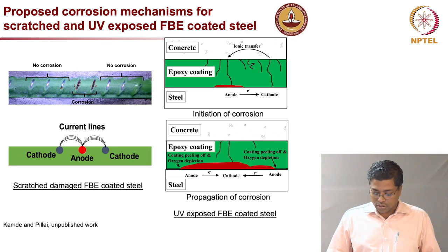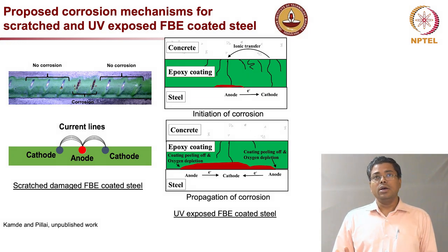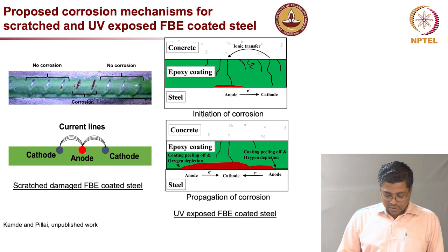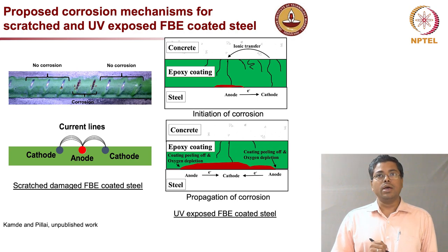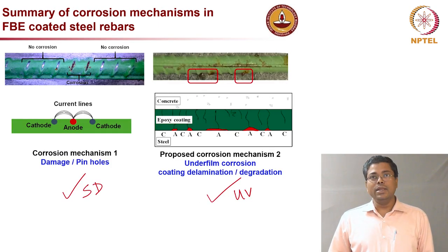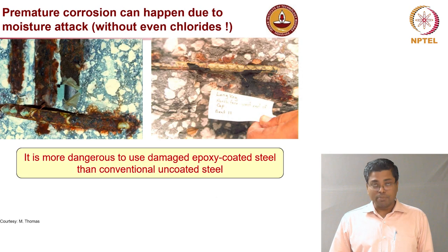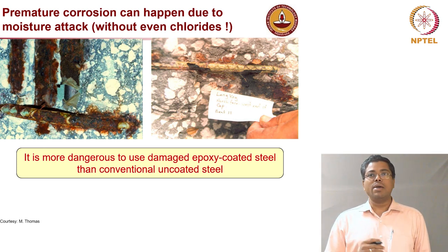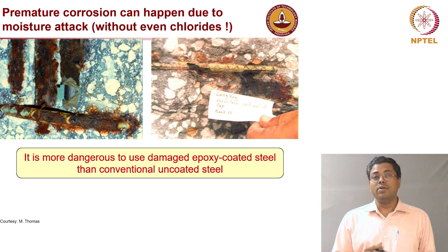This is a summary of the two mechanisms: if there is scratching, this is the proposed mechanism; if there is UV exposure, this is the mechanism. The formation of anodic and cathodic sites and under-film or crevice corrosion will lead to localized corrosion that is hard to identify or detect. At the same time, it can lead to significant section loss locally.